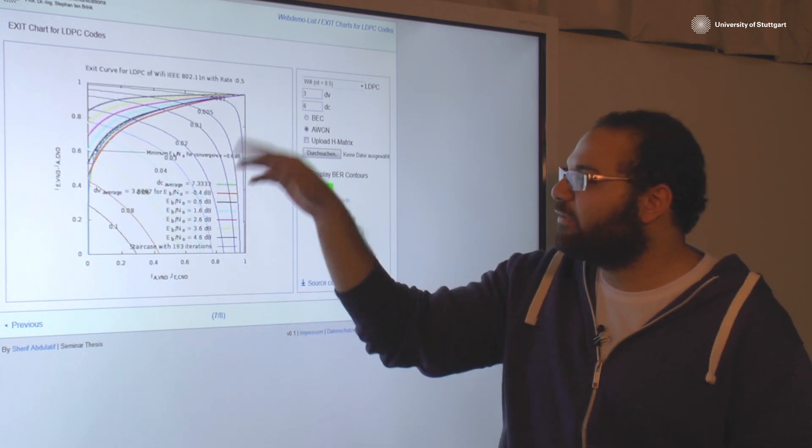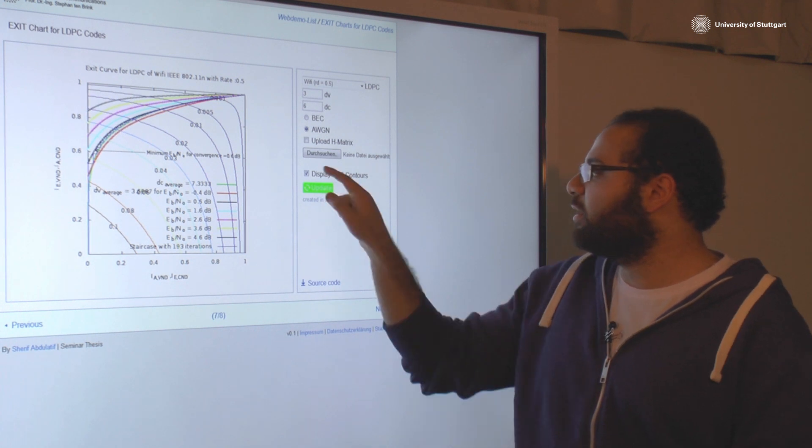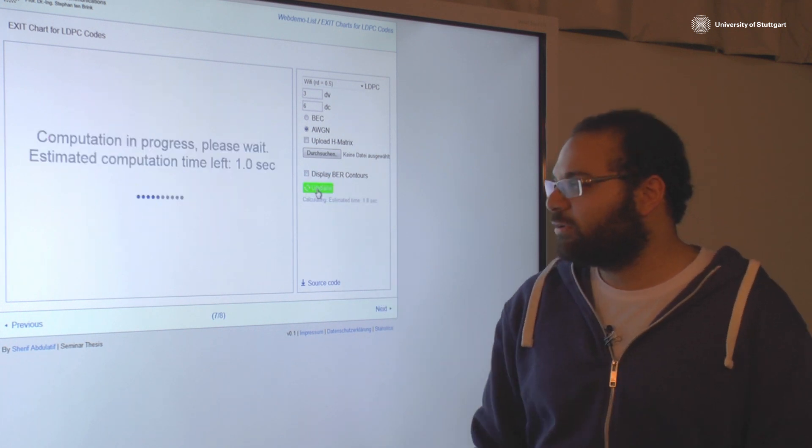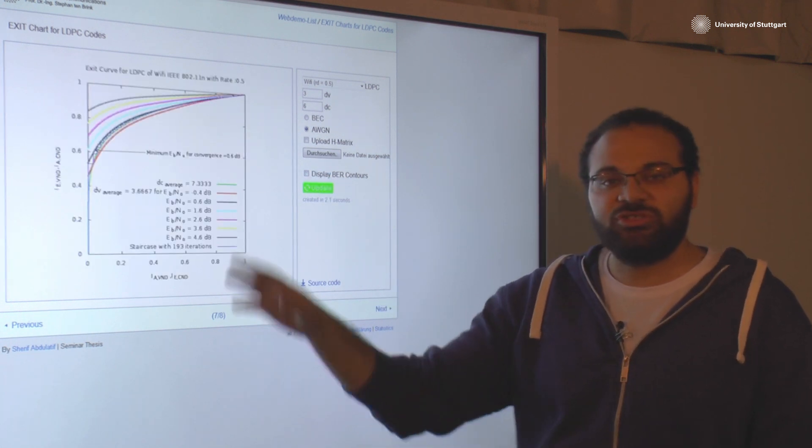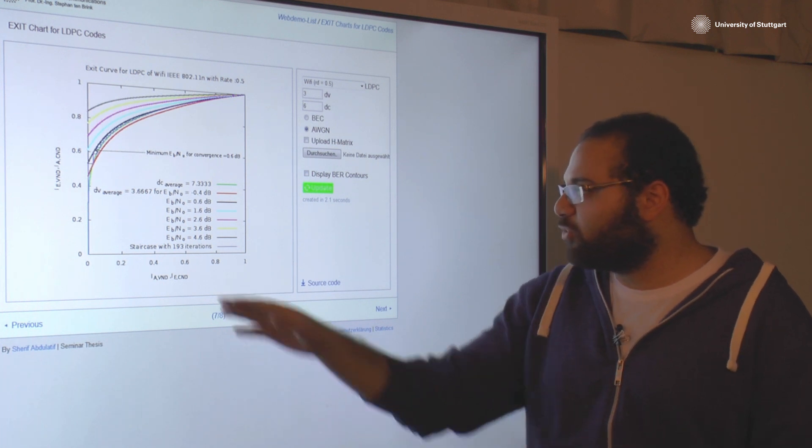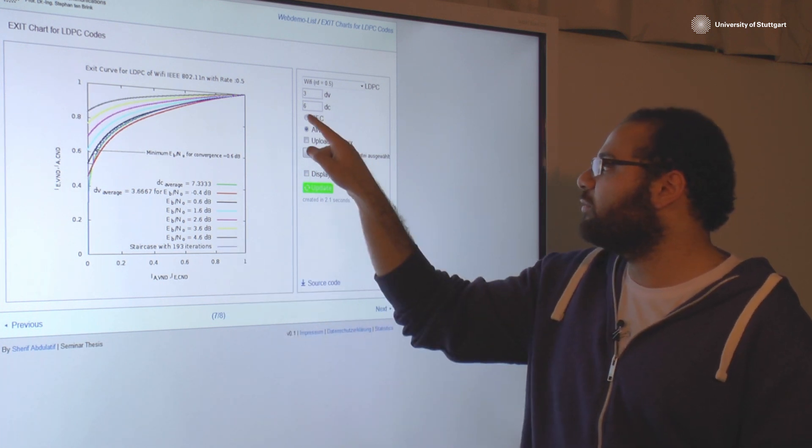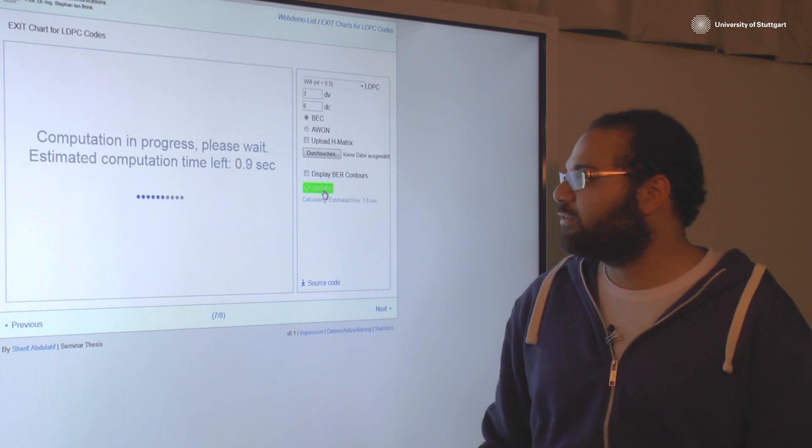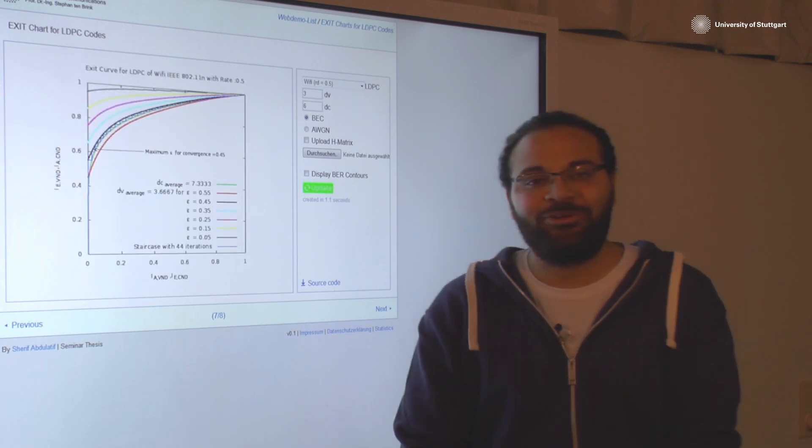You can see here the convergence behavior and the bit error rate values over different positions in the exit chart and number of iterations. Thank you for your attention.